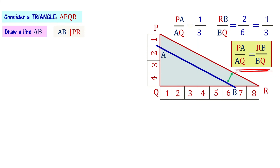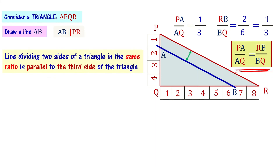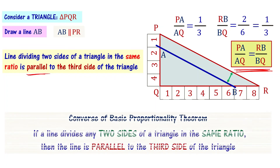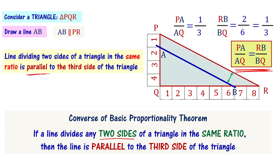The line dividing two sides of a triangle in the same ratio is parallel to the third side of the triangle. This is the Converse of Basic Proportionality Theorem: if a line divides any two sides of a triangle in the same ratio, then the line is parallel to the third side of the triangle. That's exactly what we have seen.